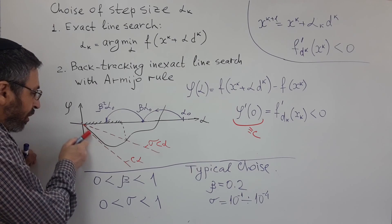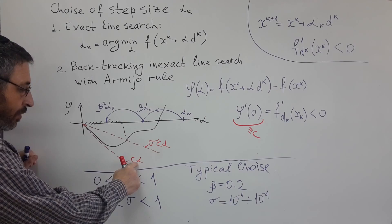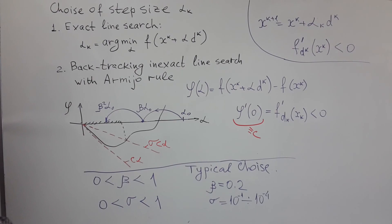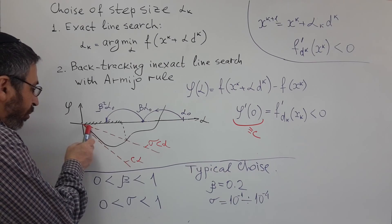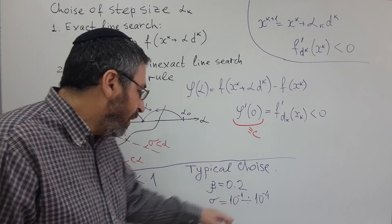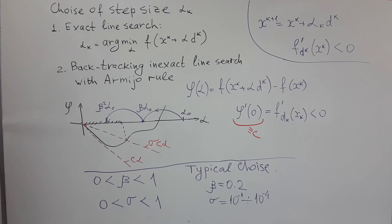We draw a tangent line to the plot of our function phi of alpha in the origin. It's c alpha, where c is just derivative of phi of zero, and this is the directional derivative of our function in the direction of dk. And also we will draw another straight line with smaller slope sigma c alpha. Quite often sigma may be zero point two or zero point one, but in many cases it may be even smaller.